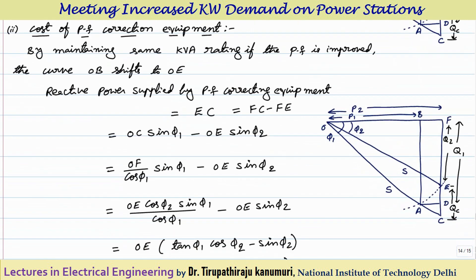Instead of expanding, if I improve the power factor using correction equipment — maintaining the same KVA rating — the curve OA will shift to OE. The reactive power that must be supplied by the power factor correcting equipment equals QC, which equals EC. This EC = FC − FE, because the reactive component that must be compensated is the difference between the reactive power at the old and new operating points.